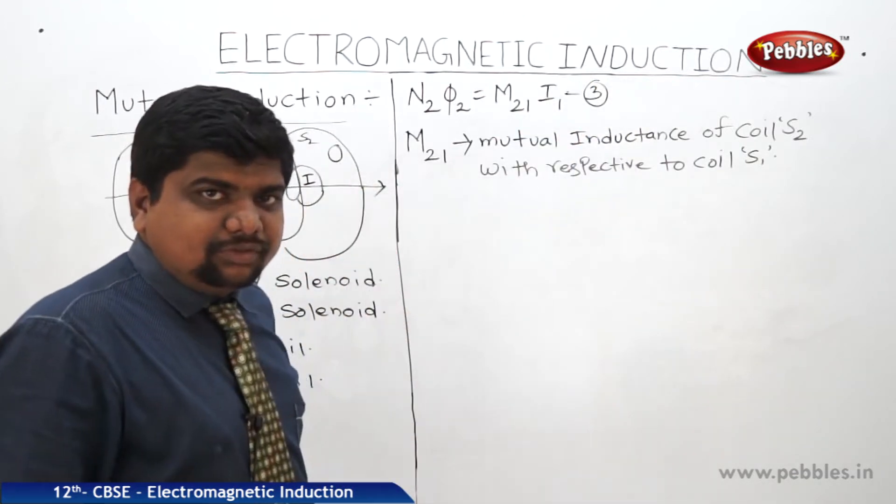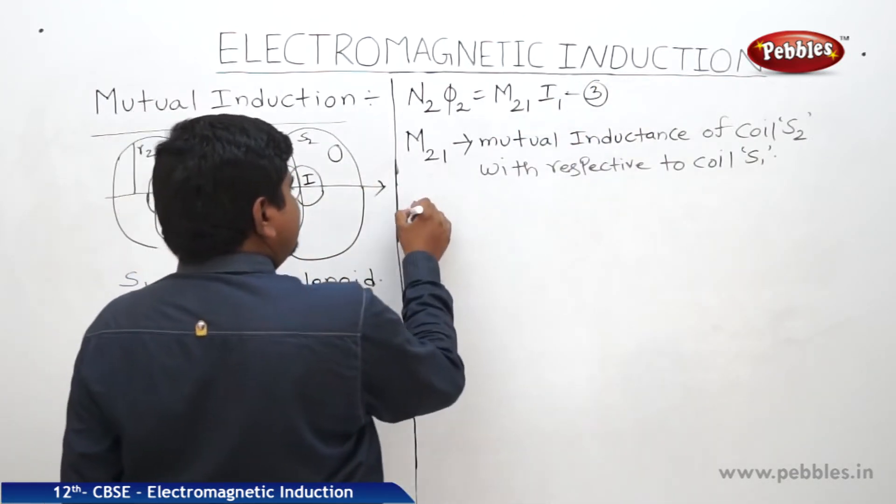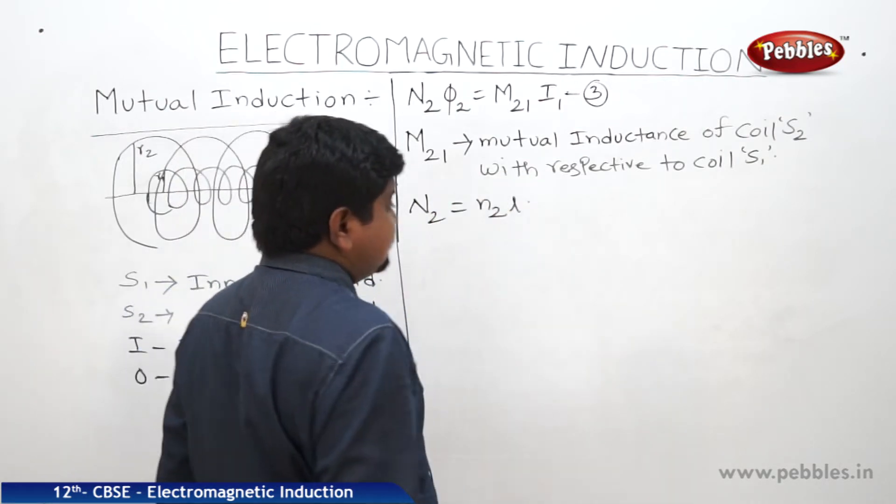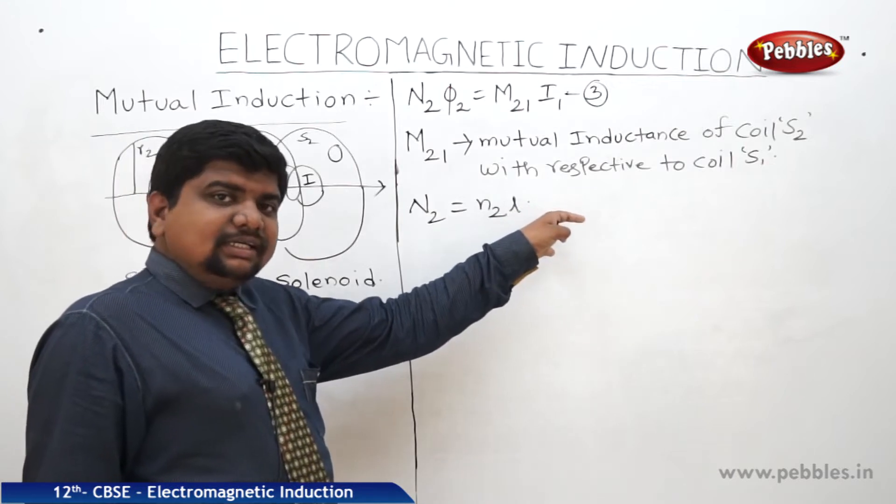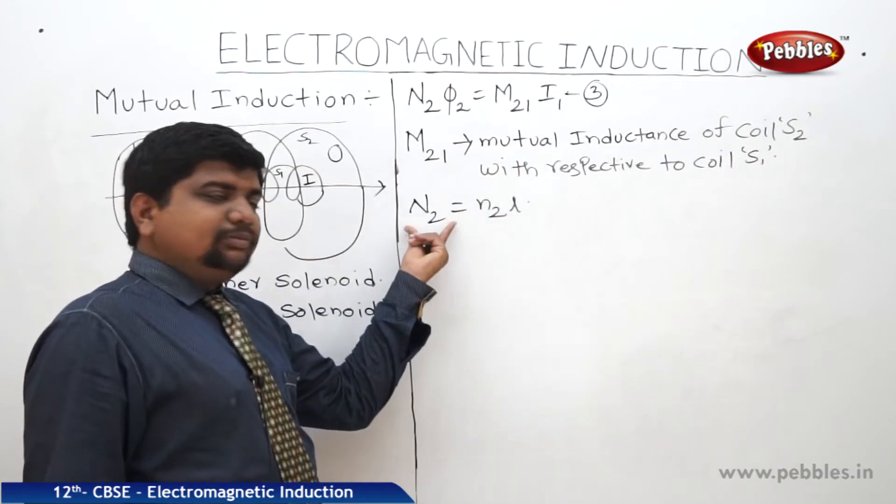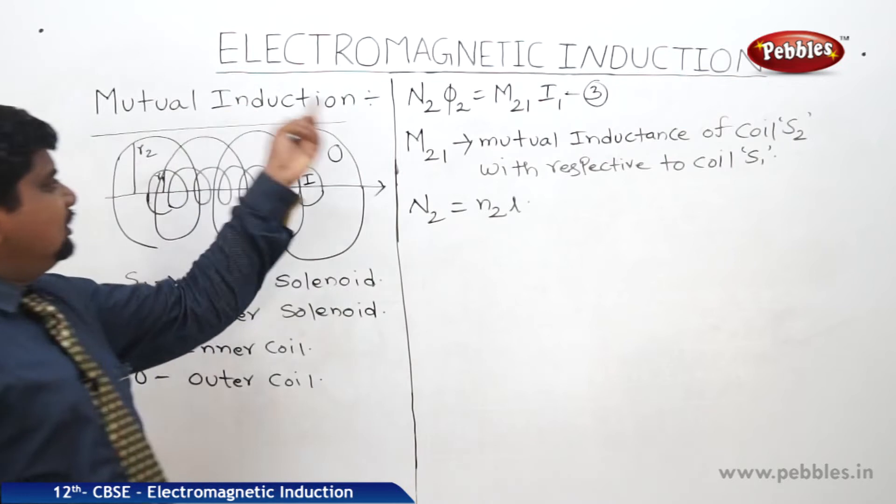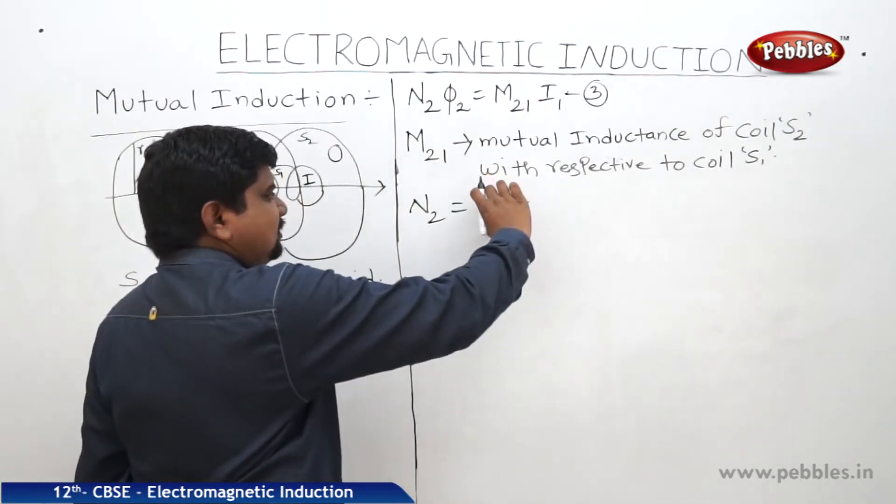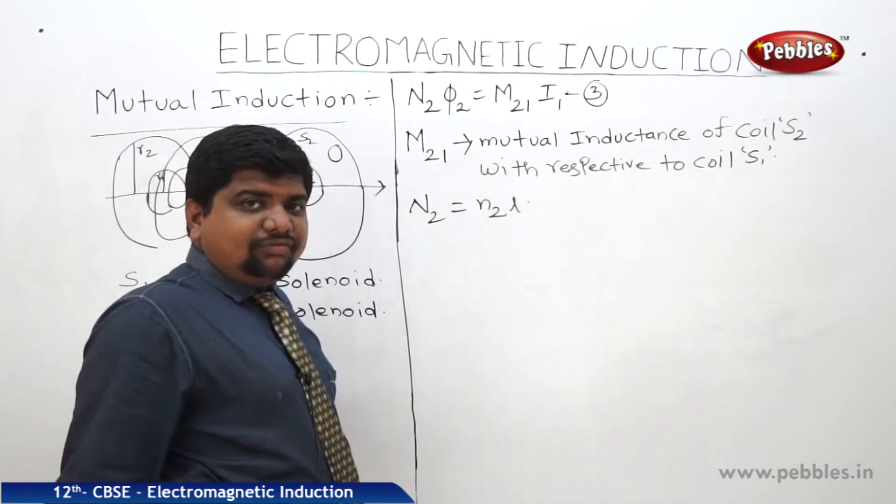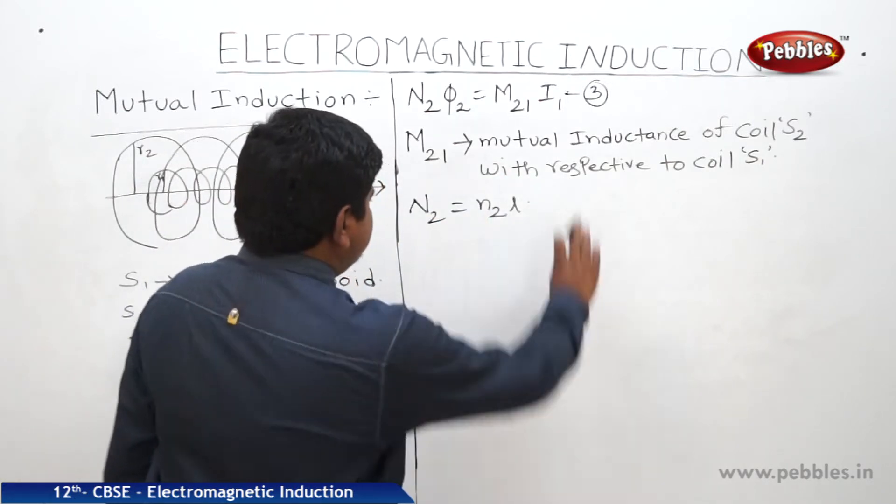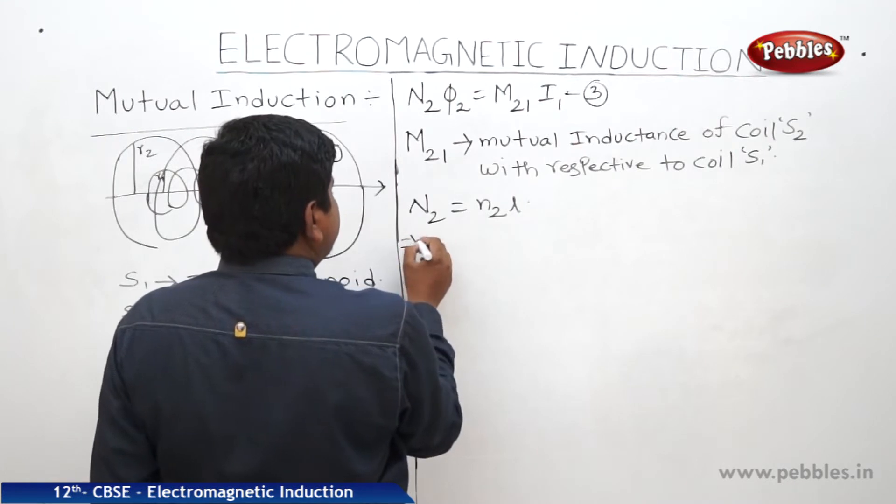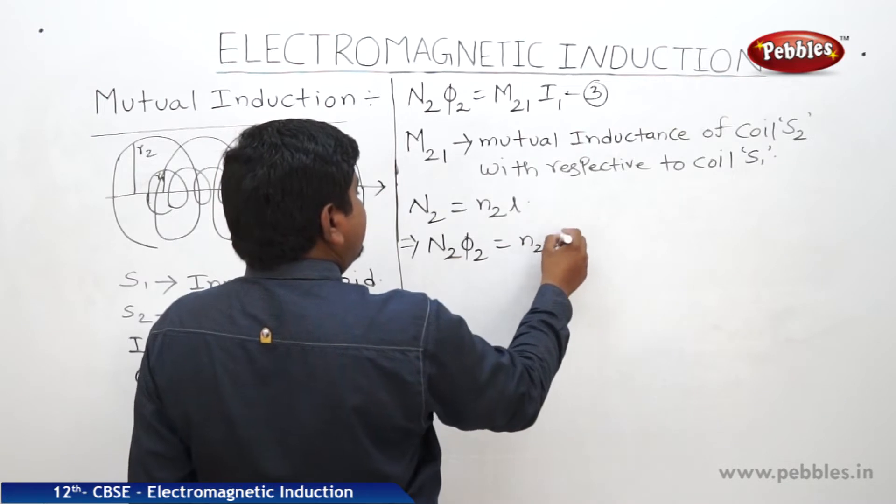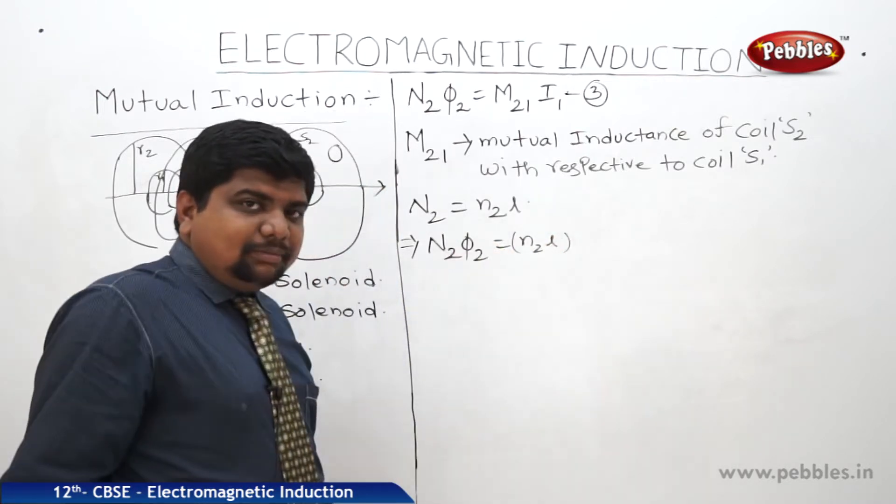We already got the equation for N12 before. What is this N2? We can write it as N2L because N2 turns each turn has length L. The multiplication product is the total number of turns in the secondary coil. So now we can write N2 phi 2 is equal to N2L into this phi 2 is nothing but B dot A.